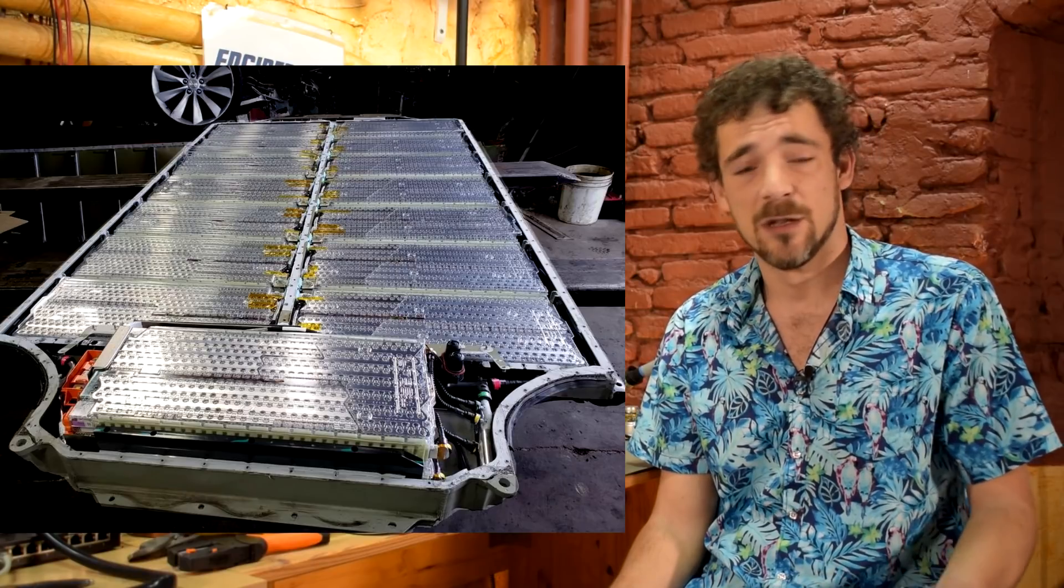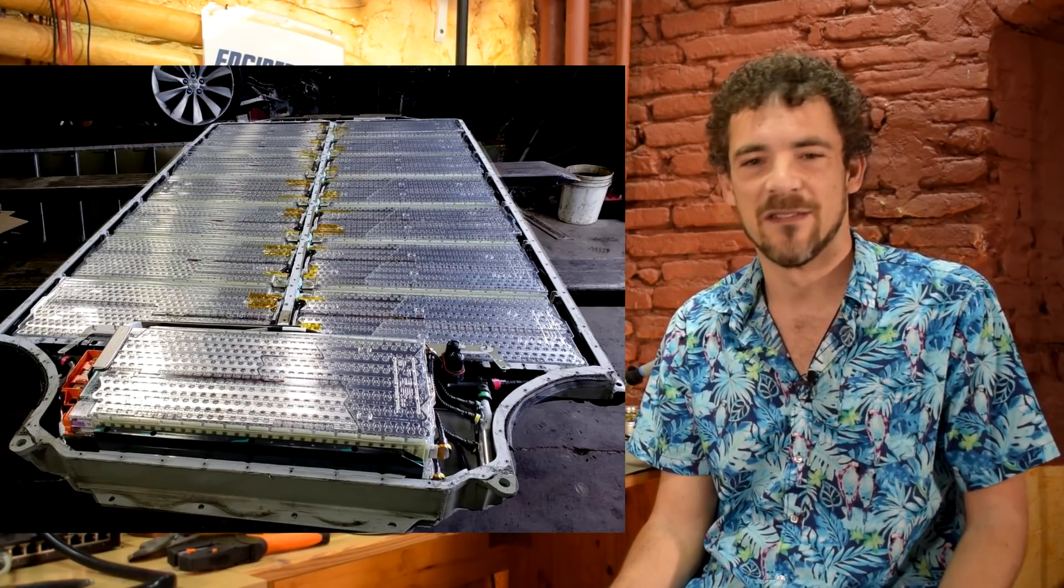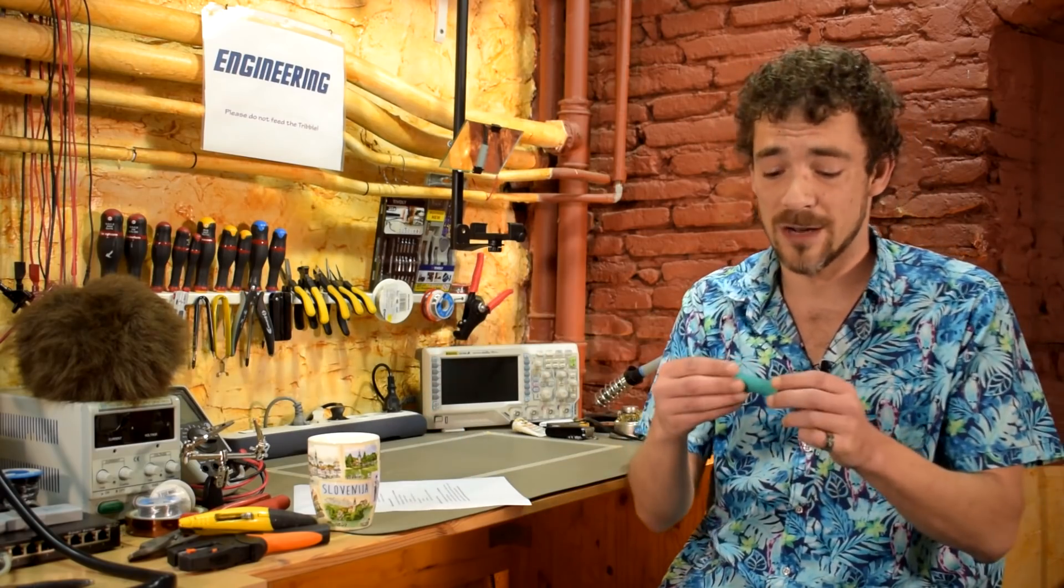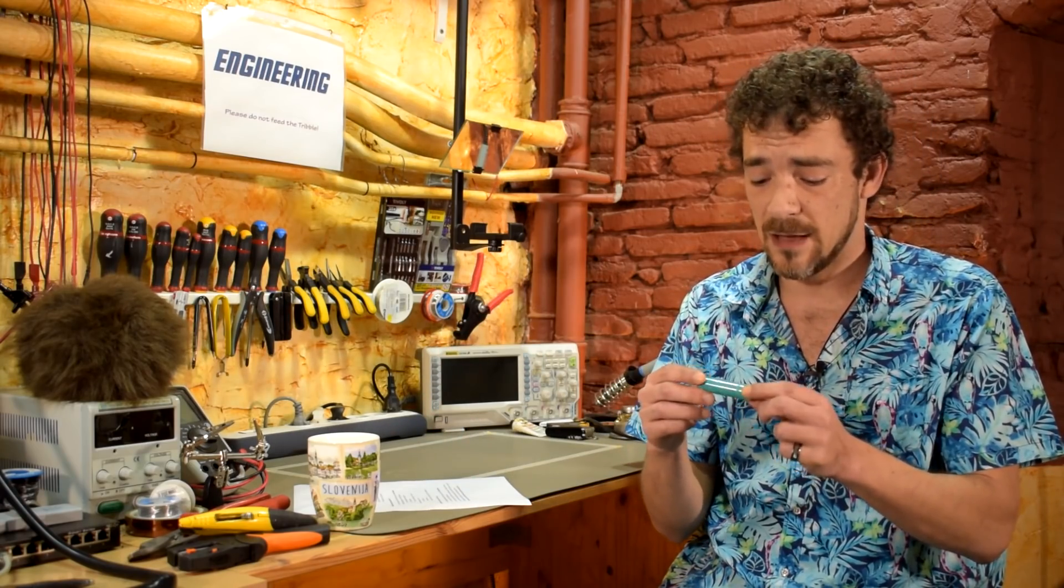A common Tesla battery pack, until just recently anyway, was about 75 kilowatt hours. Tesla battery packs had 18650 cells like these. They're specialized Panasonic cells with special electronics and controls, but generally speaking, you have a bunch of little cells like this, you put a whole ton of those together and you have a Tesla battery pack and that's what makes the car go.